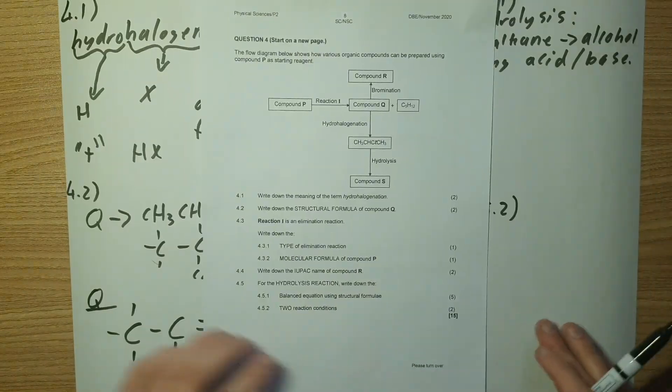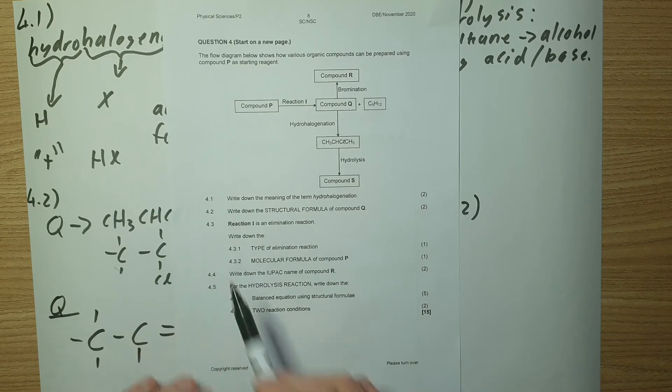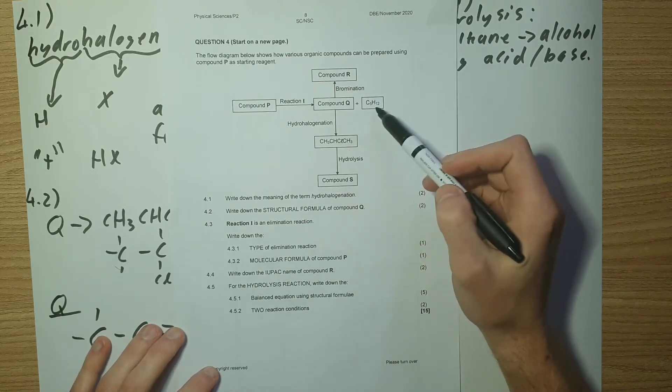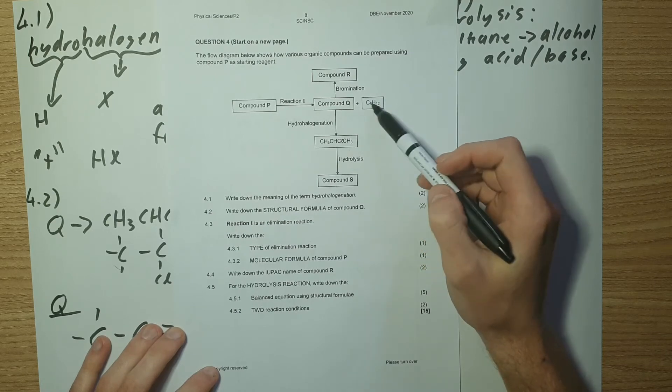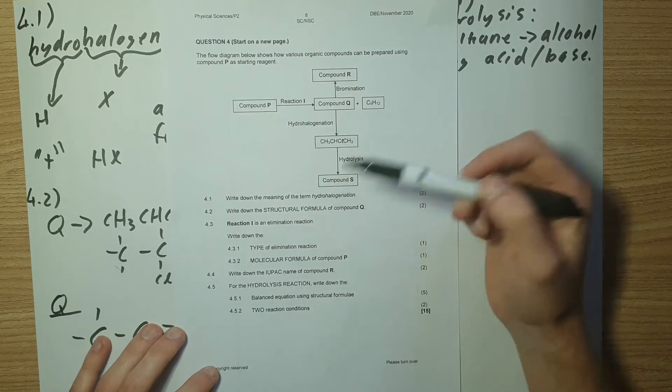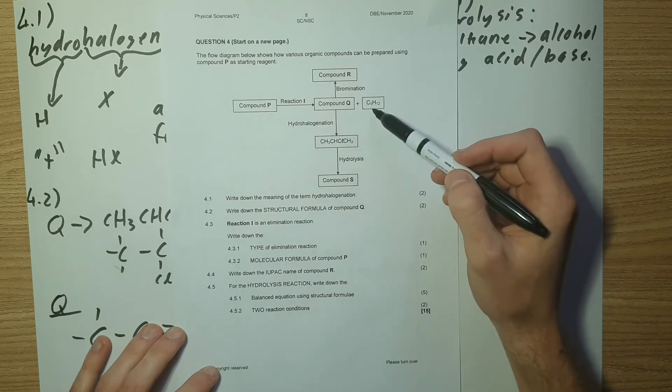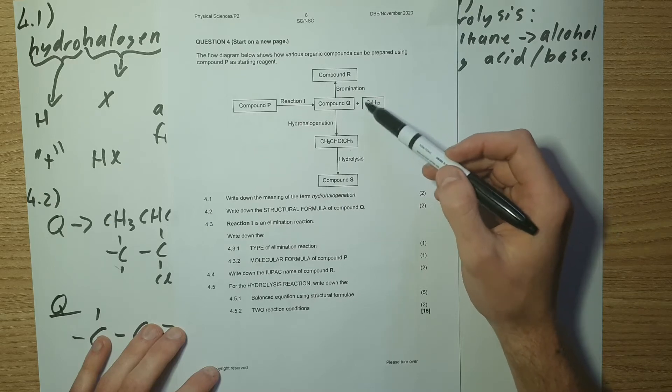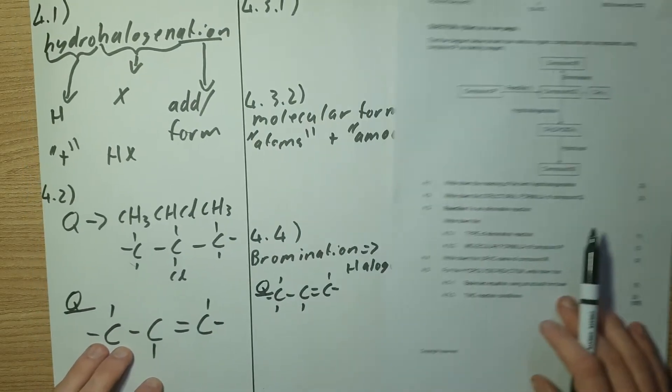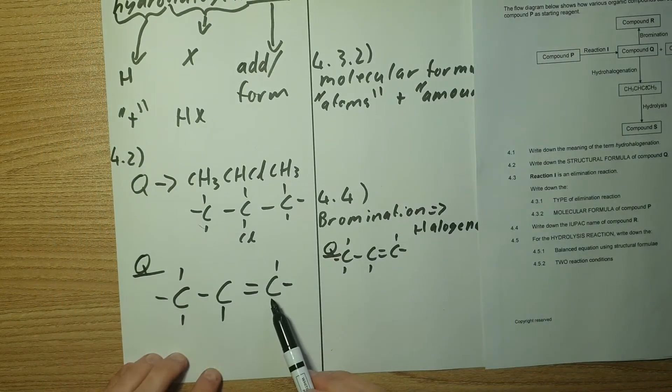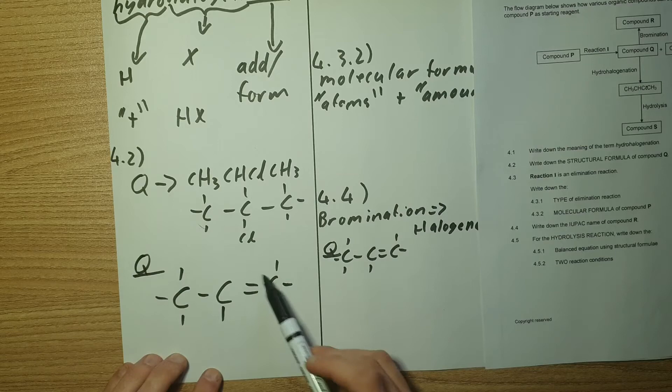Now let's have a look at 4.3. It says reaction one is an elimination reaction. So they've indicated we're eliminating something. We can see we have compound Q plus another compound, so we've split something up here otherwise known as elimination. We've got a carbon chain with five carbons and 12 hydrogens. Now Q we saw had three carbons with a double bond in it. This double bond should be ringing some bells.